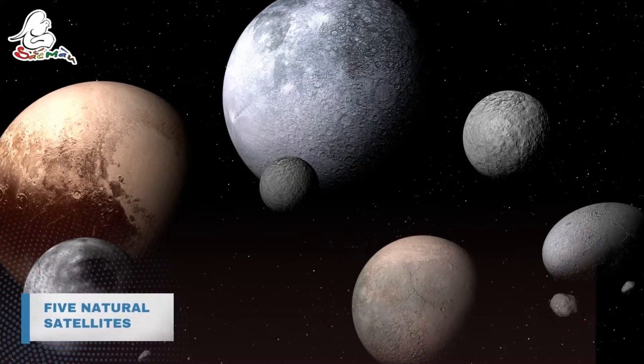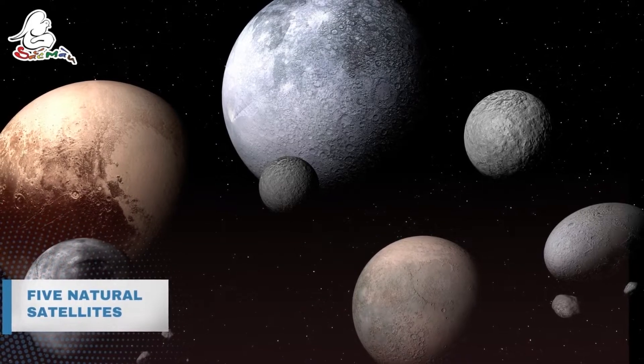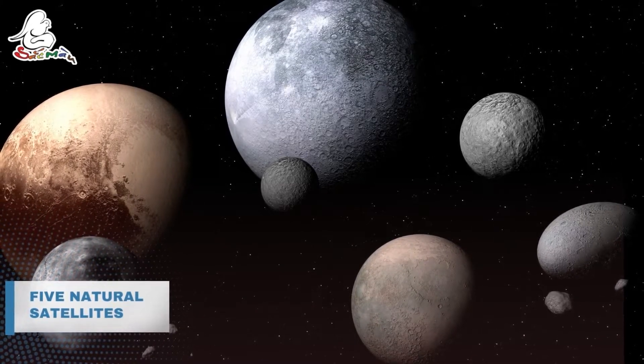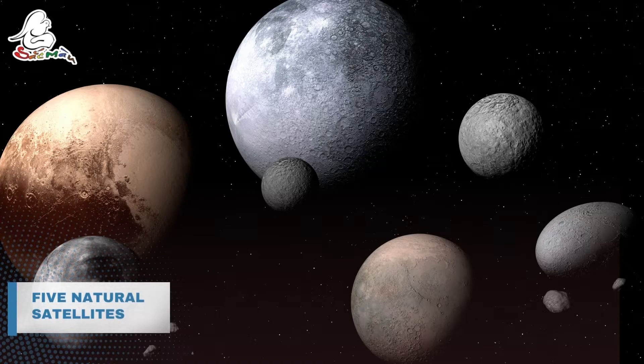Pluto has five natural satellites: Charon, Nex, Hydra, Corberus, and Styx. This moon may have formed by a collision between Pluto and some other Kyber Belt objects millions of years ago.